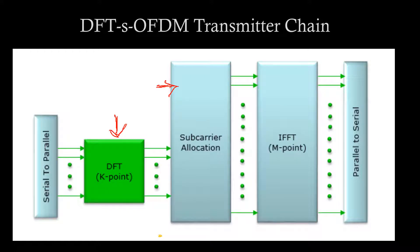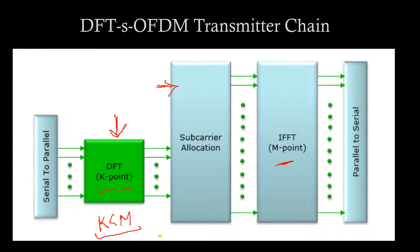If the IFFT we are taking is of M points, then in DFTS OFDM we first take a K-point DFT, and usually to get the PAPR reduction we keep K to be less than M — that is the basic fundamental of DFTS OFDM. After that, we do some subcarrier allocation on the K subcarriers. For example, the simplest allocation is to interleave the K subcarriers across M subcarriers, or we can do localization, or we can zero-pad the remaining M minus K positions. So there are multiple techniques for subcarrier allocation.